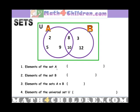What are elements of set A? Elements of set A are 2, 5, 8, 9, and 10.